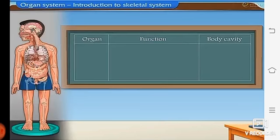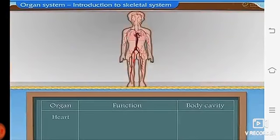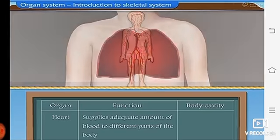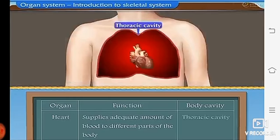The first important organ is the heart. It is an important body organ which supplies an adequate amount of blood to different parts of the body. It is situated in the thoracic cavity.